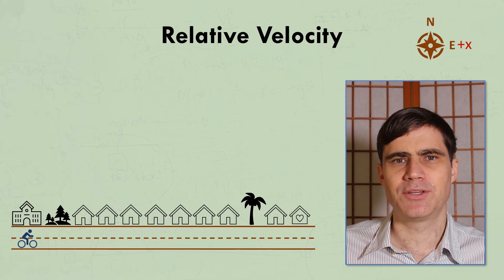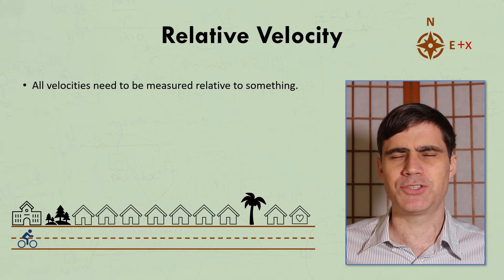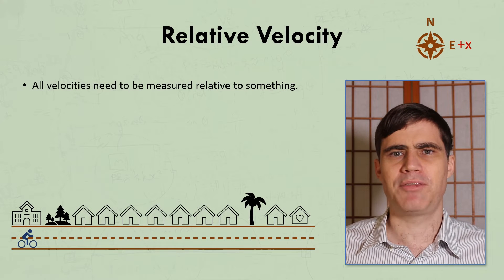As well as needing a direction, since velocity is a vector, we sometimes also need to consider what a given velocity is relative to, and it's usually the ground.